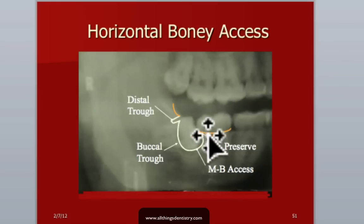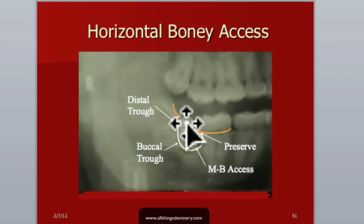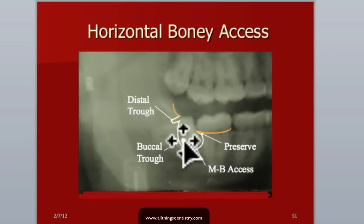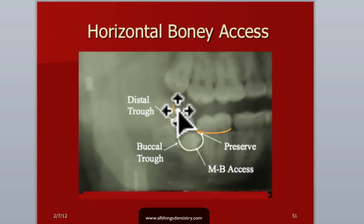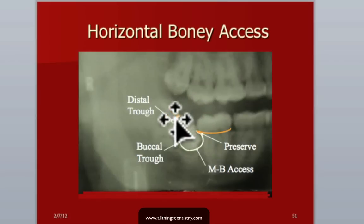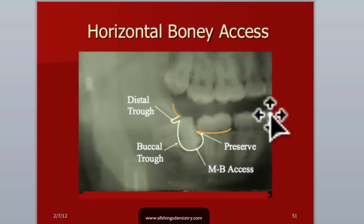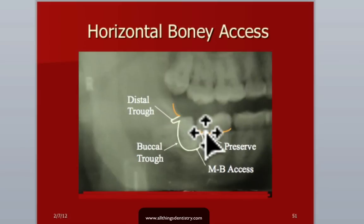What is the bony preparation for this? I just lean the bur against the crown and follow it down as my guide or fence, remove the bone on the buccal. A little distal trough. Now, you've elevated the lingual flap and the distal flap — there are lingual nerves back there, so you should not have any danger of hitting the lingual nerve making a little distal groove, because that's in the soft tissue, not in the bone. You always want to preserve the bone on the distal of the second molar.